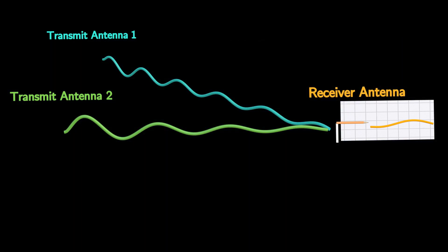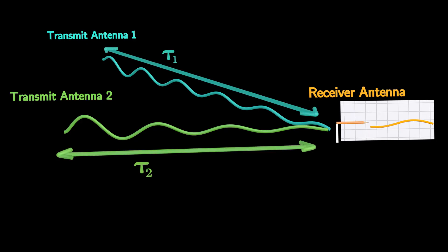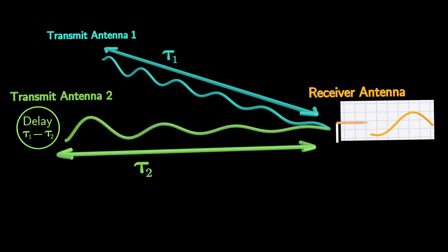But we can overcome this issue using beamforming. In beamforming, the transmitter measures the differences in path delays for each signal. Then, the transmitter compensates for these delays by adjusting the transmission timing at each antenna.